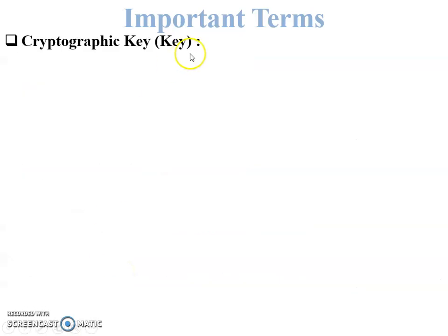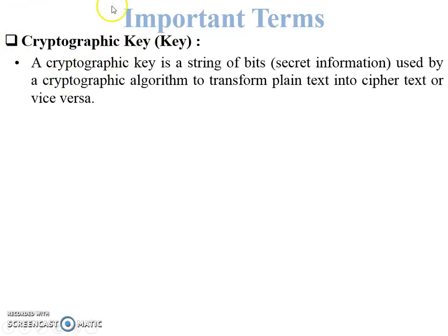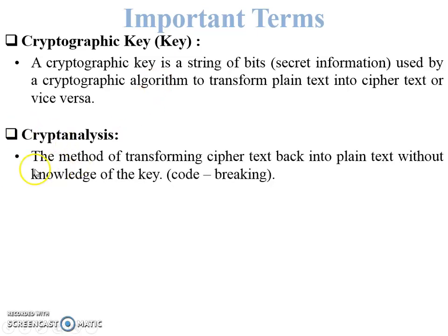Next is the cryptographic key. A cryptographic key is also an input into the encryption or decryption algorithm, along with the plaintext or ciphertext. A cryptographic key is a string of bits and is always secret — known only by the sender and receiver. It is used by a cryptographic algorithm to transform plain text into ciphertext or vice versa. The key may be the same or different in encryption and decryption.